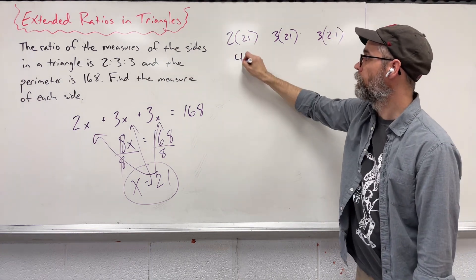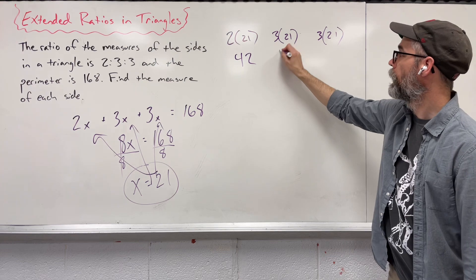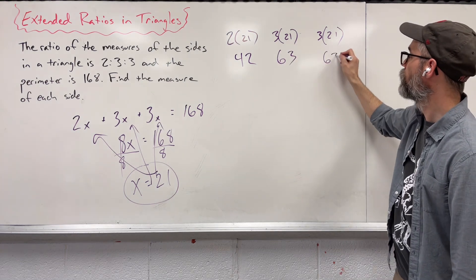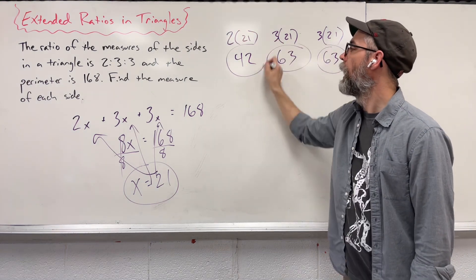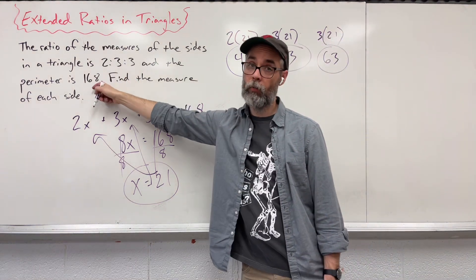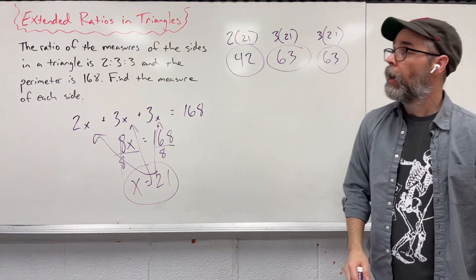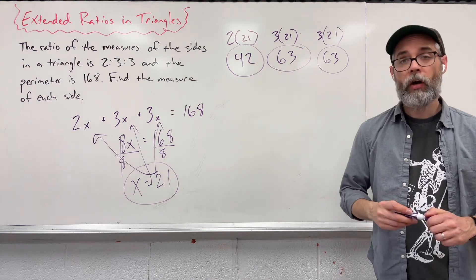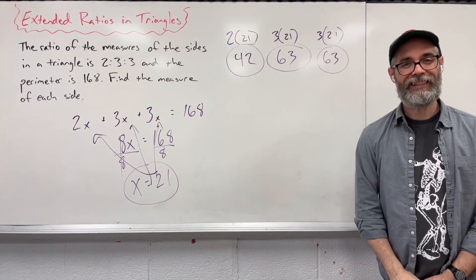2 times 21 is going to give us 42. We're going to get 63 and 63 again. And if we add all three of these numbers up, I guarantee you, we're going to get 168. And that's using extended ratios in a triangle to help find the measure of sides.